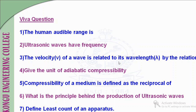The velocity of a wave is related to its wavelength by: V = νλ, where V is velocity, ν is frequency, and λ is wavelength. The unit for adiabatic compressibility is m²/N (meter square per newton).